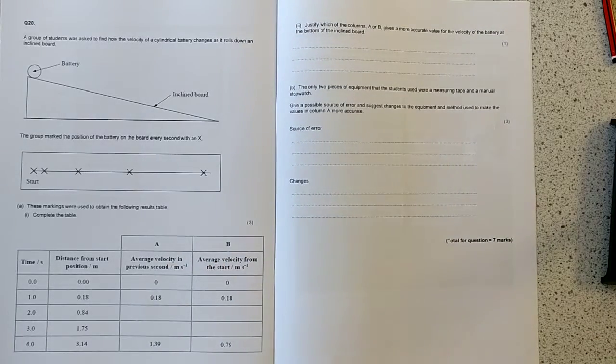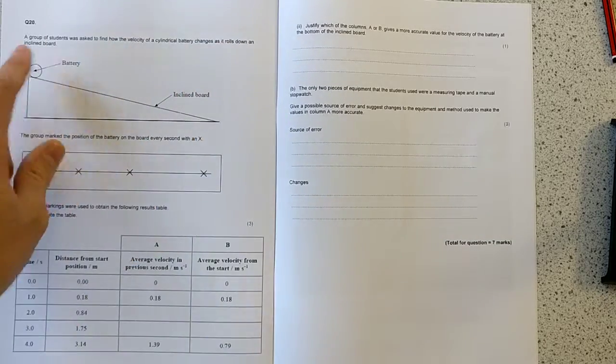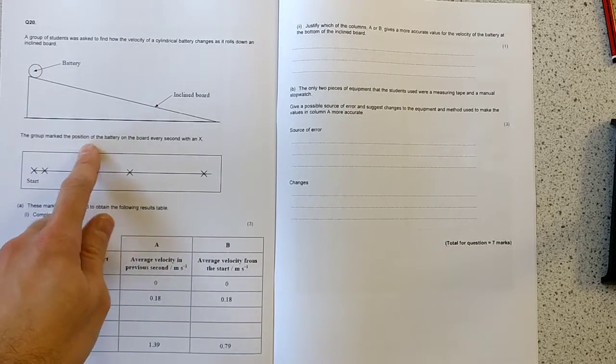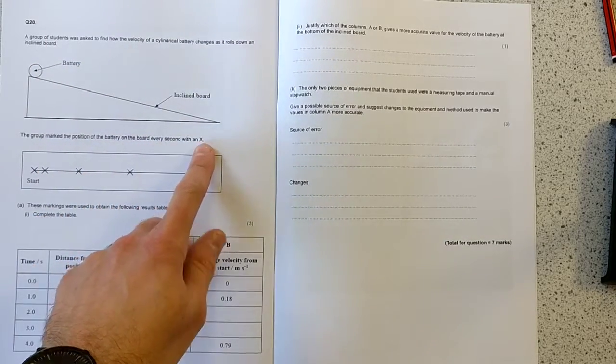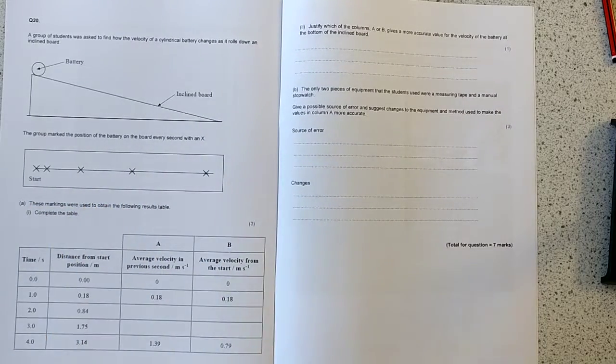OK, so here's question 20. A group of students was asked to find how the velocity of a cylindrical battery changes as it rolls down an inclined board. The group marked the position of the battery on the board every second with an X. These markings were used to obtain the following results table. Complete the table.